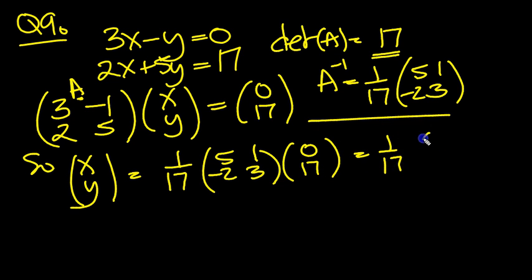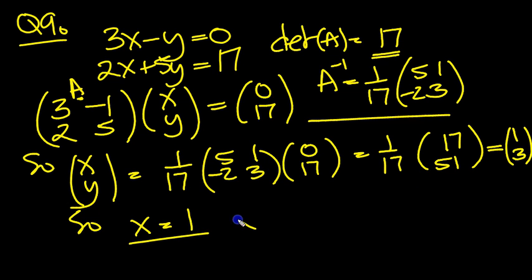And we get 1 over 17 times 5 times 0 is 0, 1 times 17 is 17. And then minus 2 times 0 is 0, and 3 times 17 is 51. So straight away, dividing by 17, we can see that's 1 and 3.